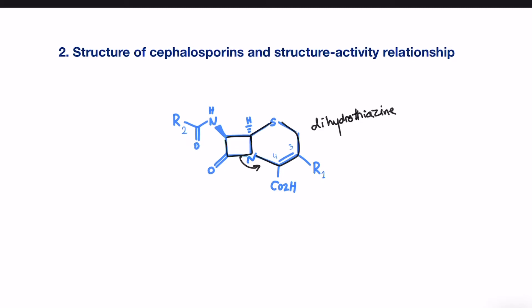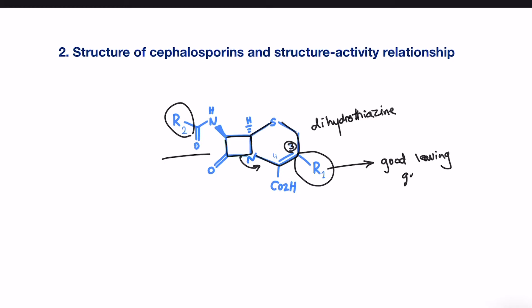Also, you can see that there are two sites of variation. First, at carbon number three within the dihydrothiazine ring, and second, within the acyl sidechain. It is preferred to have a good leaving group at sidechain number one to have better activity of cephalosporins. Once this leaving group leaves the structure, cephalosporin will be able to fit the transpeptidase active site perfectly.